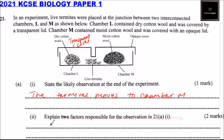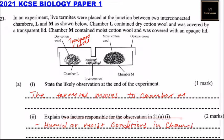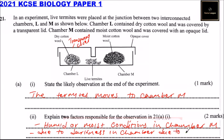Roman numeral 2 explains two factors responsible for the observation. One of them is the humid or moist conditions in chamber M. The other one is darkness in chamber M, due to the opaque lid. These are the reasons why the ants would move towards chamber M.